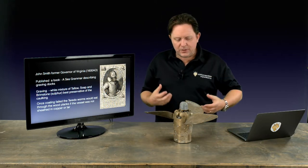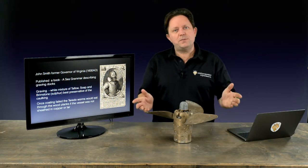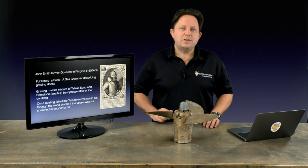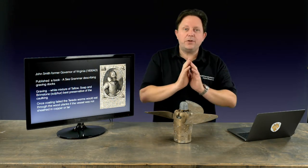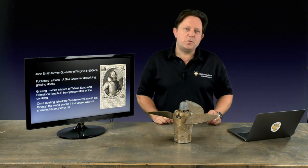But graving was a material. It was tallow, soap and brimstone, which they call sulfur nowadays. And it was a mixture that they would paint the ships, the hulls, to stop the marine growth and all things happening. This is back in the days. So the ships are wood.